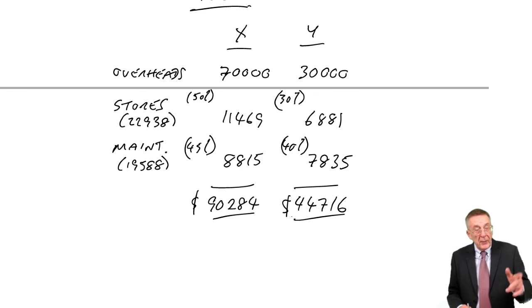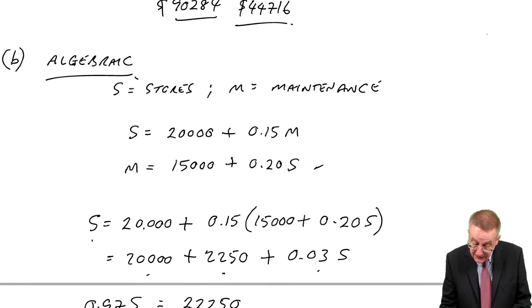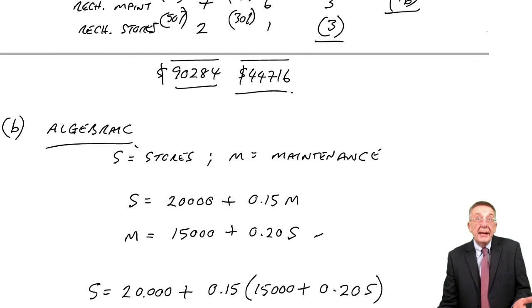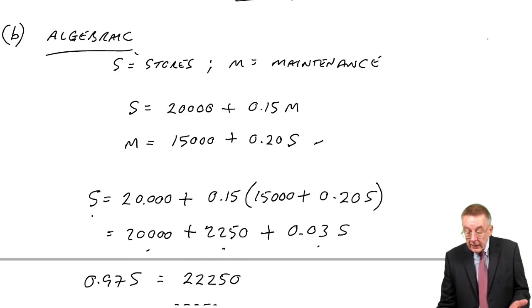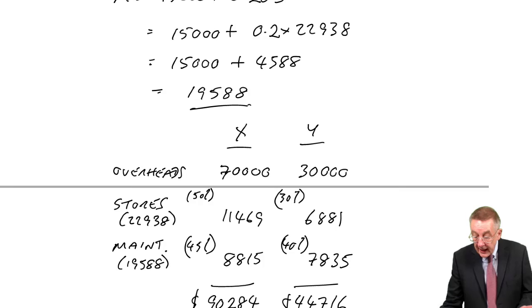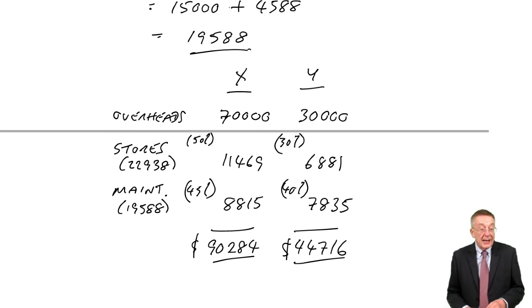And what did we get before when we used repeated distribution? 90,284. Exactly the same. It doesn't matter which approach you use. The exam, because of the nature of the questions, they can't insist you do repeated distribution or that you do algebraic. They can give you a question like that, but how you get the answer is your choice.